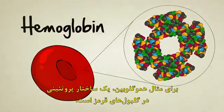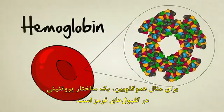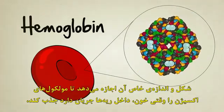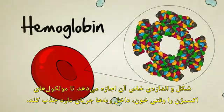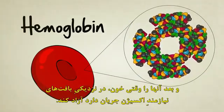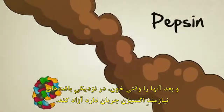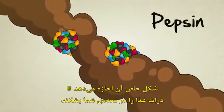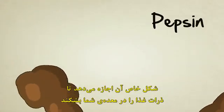Hemoglobin, for example, is a protein structure found in red blood cells. Its unique shape and size allow it to capture oxygen molecules when blood flows near the lungs, and then release them when blood flows near oxygen-starved tissues. Pepsin is a digestive protein whose unique shape allows it to break down food inside your stomach so it can be absorbed by the body.